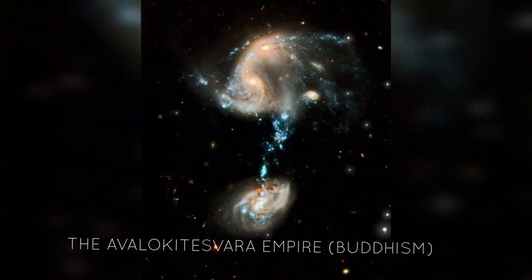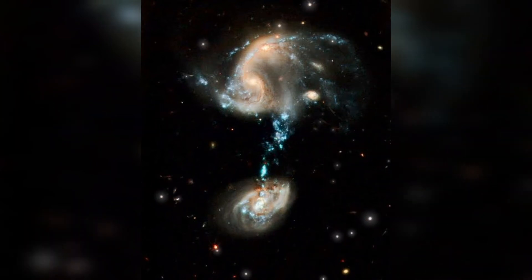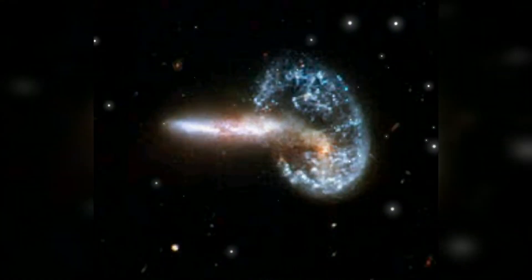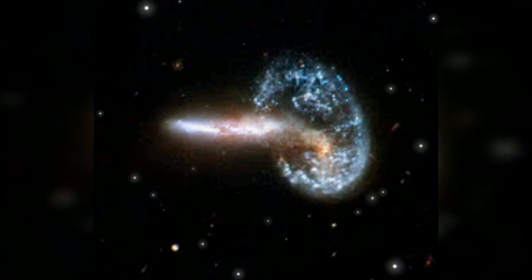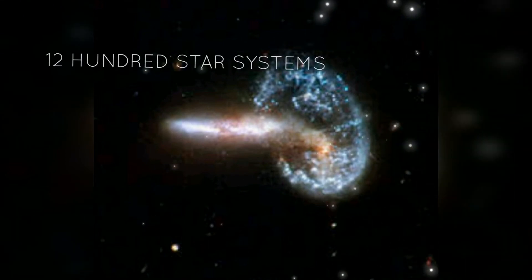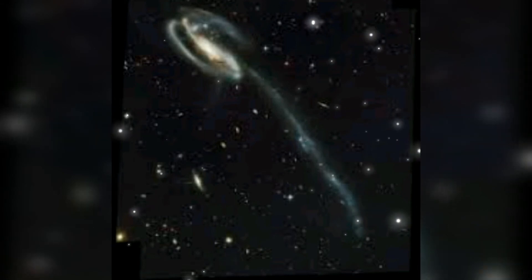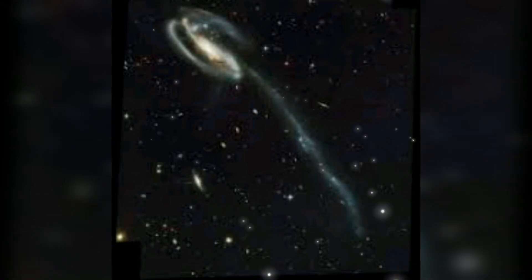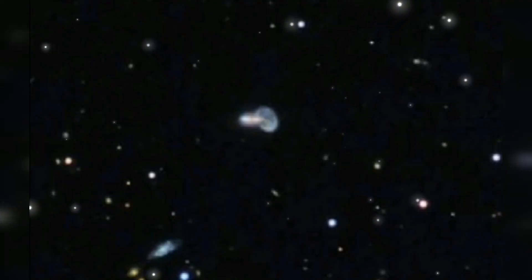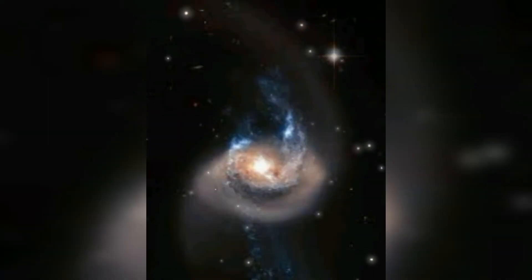and the Avalokiteswara Empire. The Holy Church of God is an extremist cult spanning at least 1,200 star systems. The members of the cult believe that the genocide of all non-believers and all alien species, as well as a number of other things, is the only way to keep the antichrist from being born.